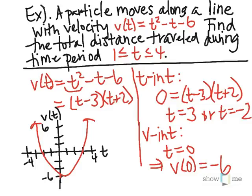At time t = 4, we can verify: v(4) = 16 − 4 − 6 = 6, so we should be up here on the graph. That looks about right. Now let's clear some space and look at what displacement and total distance would mean on this graph.